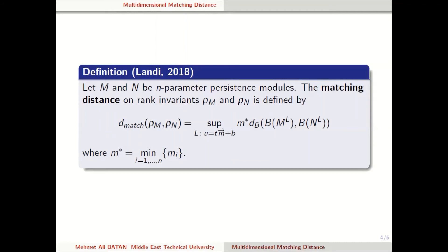The matching distance on rank invariants is: take a restriction of persistence modules M and N to the line L, look at the bottleneck distance, multiply by M-star, do this for all lines satisfying the rule above, and take the supremum. This is the matching distance.